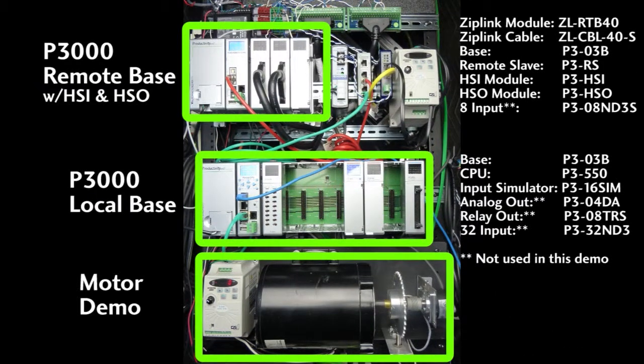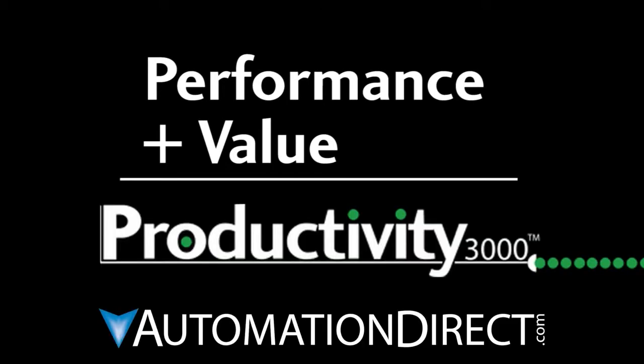Well, that's enough for the intro. Head on over to part 2 where we'll configure the hardware and do a live demo using the proximity sensors. Performance plus value – that's productivity from AutomationDirect.